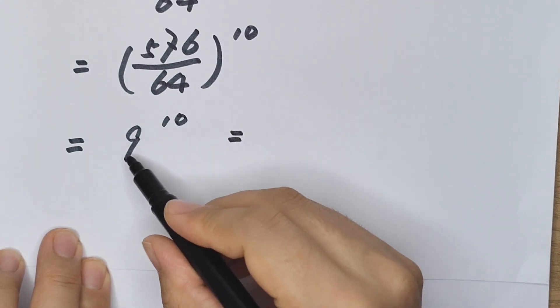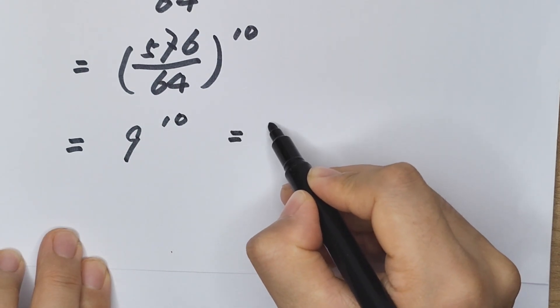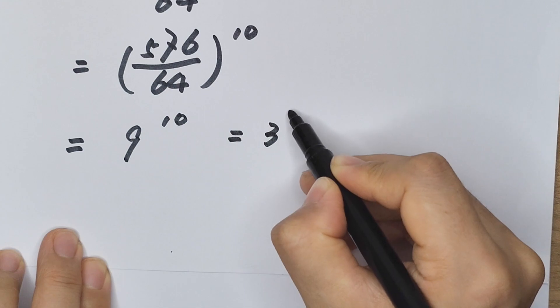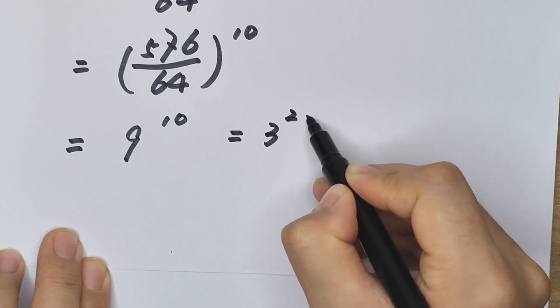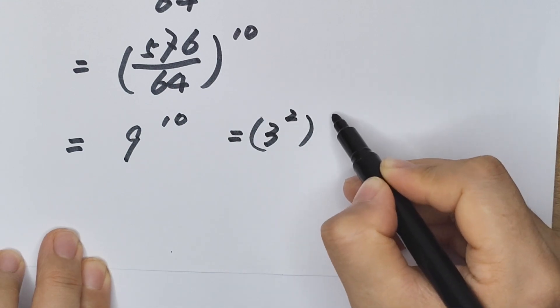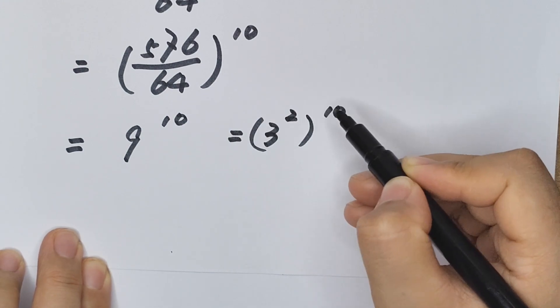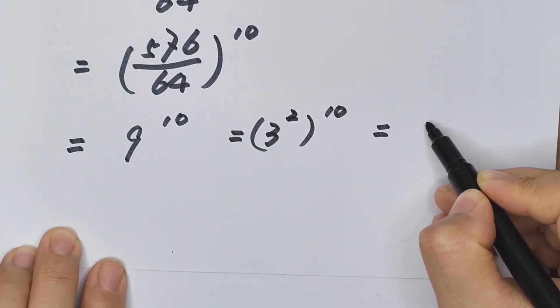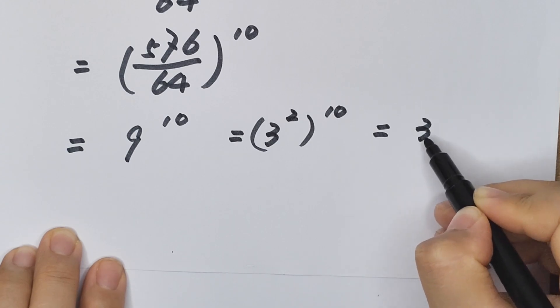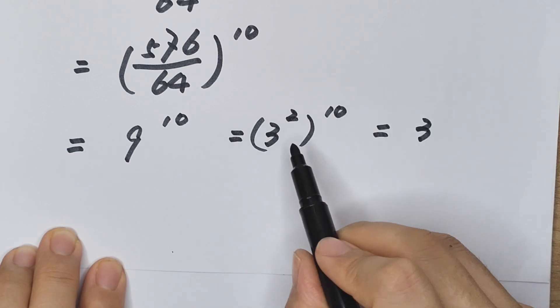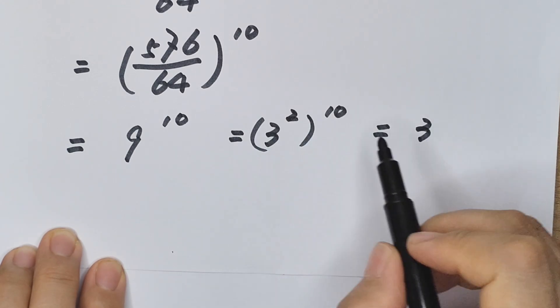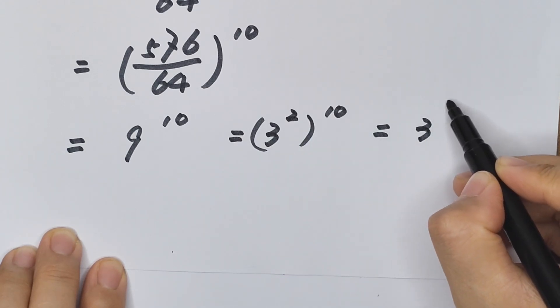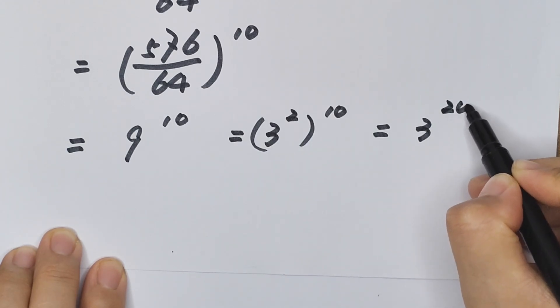5776 divided by 64 to the power of 10 equals 9 to the power of 10. Since 9 is 3 squared, this equals 3 squared, to the power of 10, so the final answer is 3 to the power of 2 times 10, which is 3 to the power of 20.